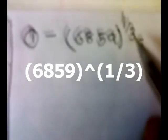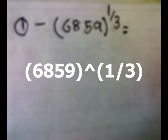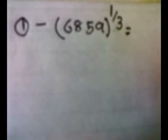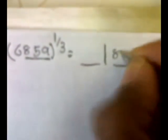Now let's take an example. Suppose we need to find the cube root of 6,859. Remember, this method only works for a perfect cube. We divide this number into two parts — the left-hand side and the right-hand side. The right-hand side will always contain three digits, so we write 859 on the right and the remaining 6 on the left.